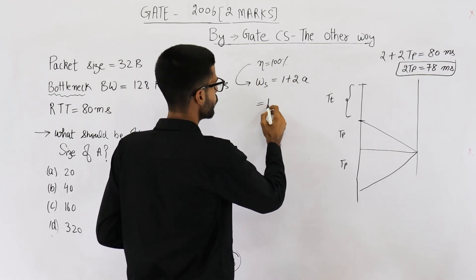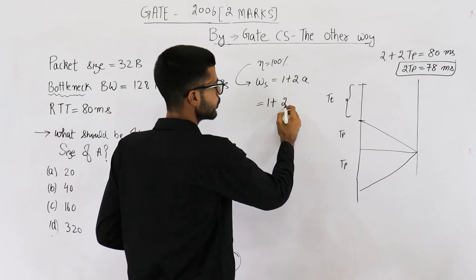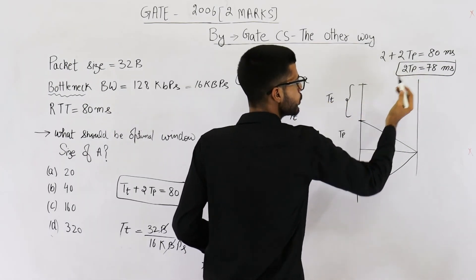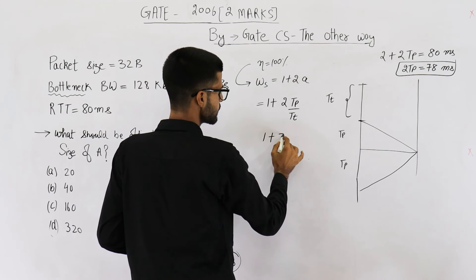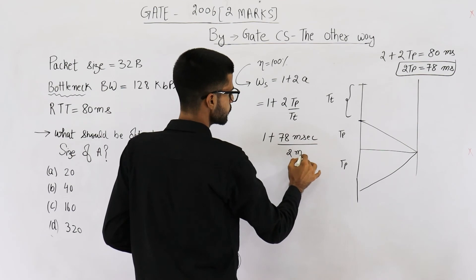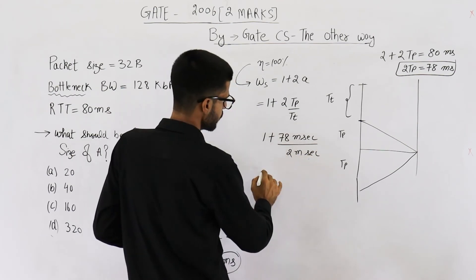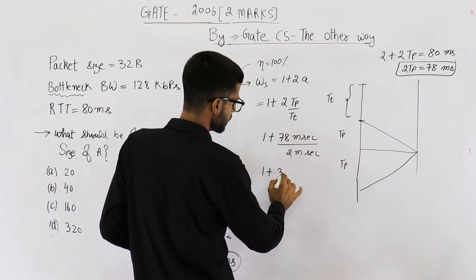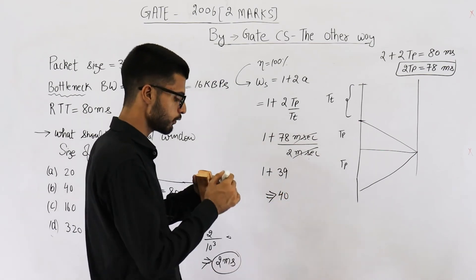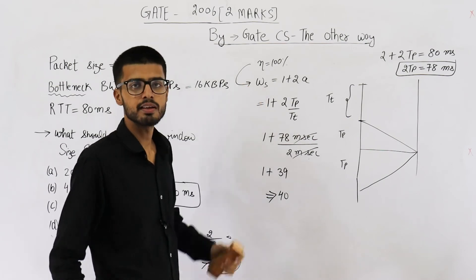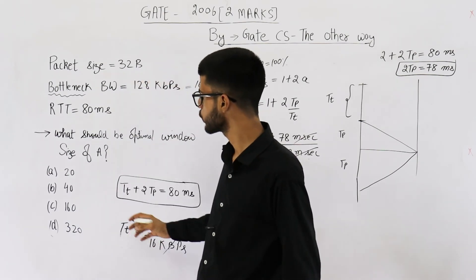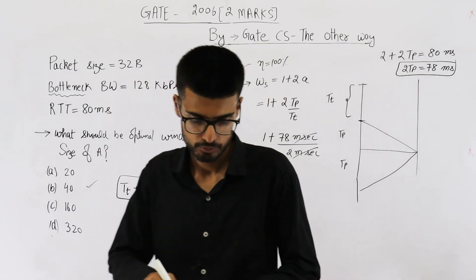1 plus 2A will be 1 plus 2TP divided by TT. 2TP, we have already found out the value of 2TP. That is 1 plus 78 millisecond divided by 2 millisecond. So it will be 1 plus 39. This millisecond and millisecond can be cancelled. That means 40. So value of 1 plus 2A is 40. That means sender window size must be of 40 packets to get 100 percent efficiency. So answer to this question is option B, 40.